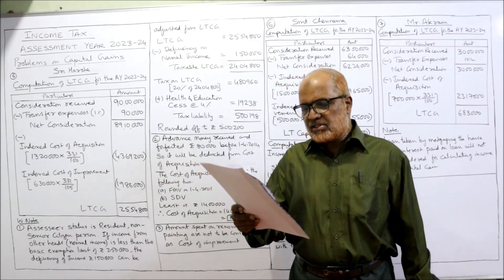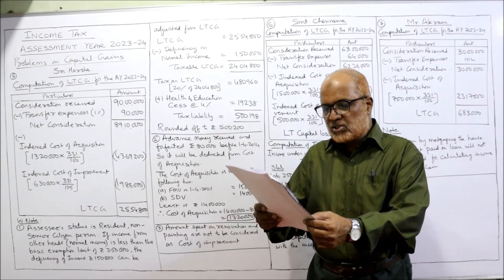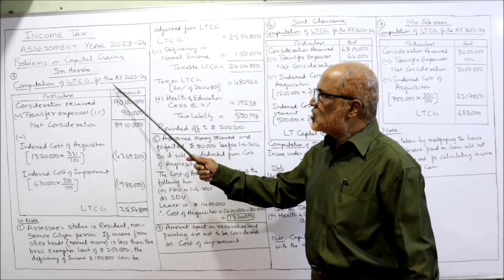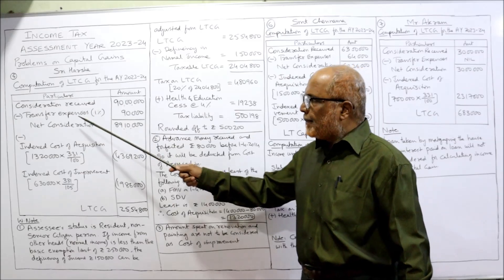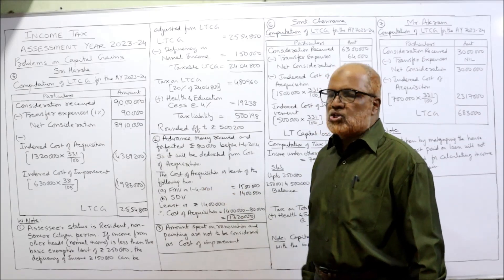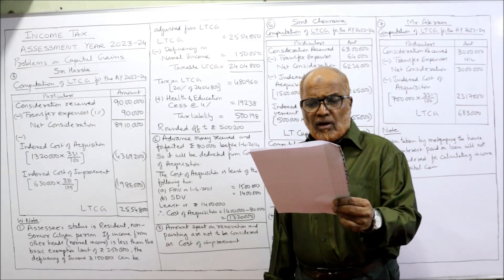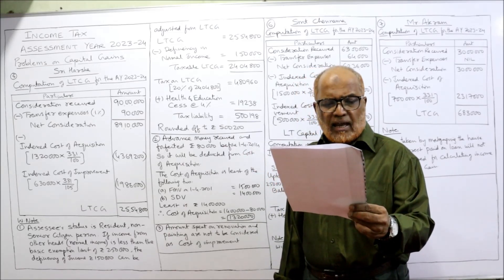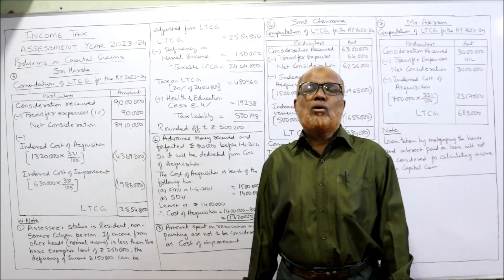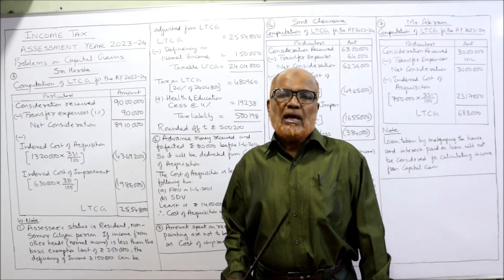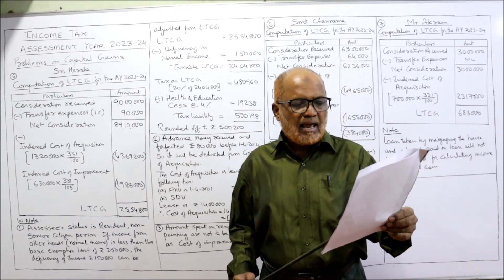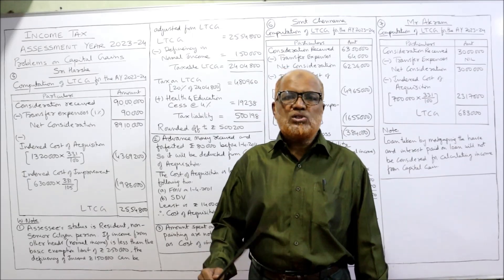The house is sold during the previous year for Rs. 90,00,000 and selling expenses were 1%. Consideration received is Rs. 90,00,000. Transfer expenses: 1% of 90,00,000 is Rs. 90,000. Net consideration is Rs. 89,10,000. Now, FMV on 1st April 2001 was Rs. 15,00,000 and the stamp duty value was Rs. 14,00,000. Whenever stamp duty value is given, the cost of acquisition will be taken as the lower of the two — FMV on 1st April 2001 or stamp duty value.